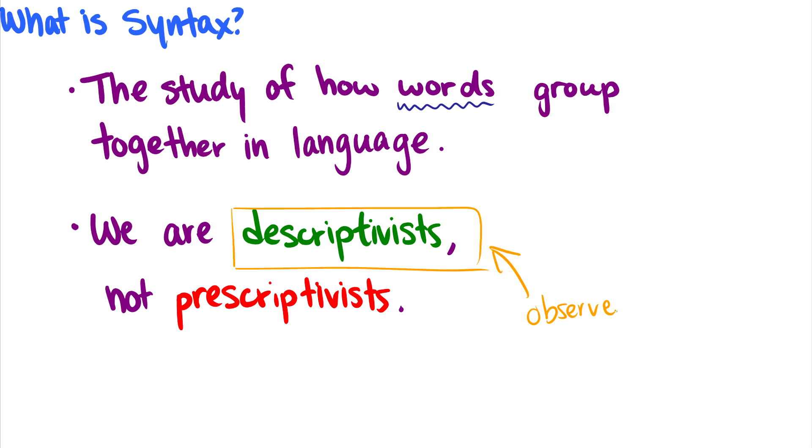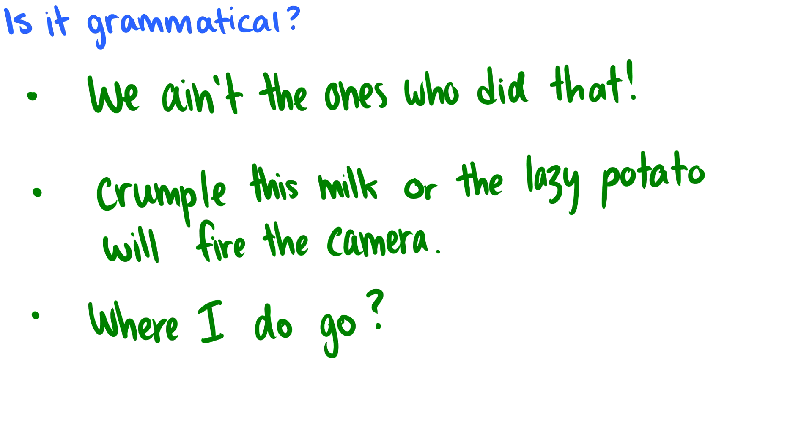We say, hey, look, if everyone in this English-speaking population speaks like this, then it's going to be okay. And what do I mean by this? Well, let's take a look at some sentences and ask whether or not they're grammatical. And these are descriptivist grammatical, not prescriptivist grammatical.